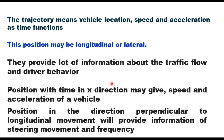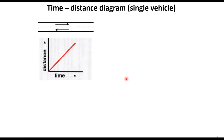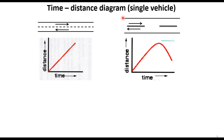Let me tell you how to read these trajectories and what information they can give you. Consider a vehicle moving on a road — this is the time-distance diagram of the vehicle. If it is moving at a constant speed, this will be a straight line. So this is the trajectory of a vehicle moving on a highway at constant speed.